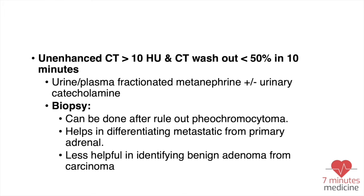If the CT scan shows more than 10 Hounsfield units and the washout is less than 50%, this goes more with malignancy or pheochromocytoma. First, we have to rule out pheochromocytoma with urine and plasma fractionated metanephrines, plus or minus urinary catecholamines. Then we evaluate for carcinoma with biopsy after ruling out pheochromocytoma — because we don't want a hypertensive crisis — and biopsy can help differentiate between metastatic versus primary adrenal disease. Sometimes it is hard to differentiate between carcinoma and adenoma on pathology.